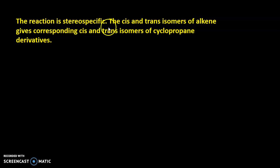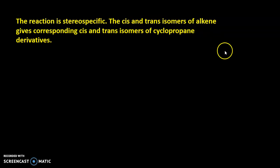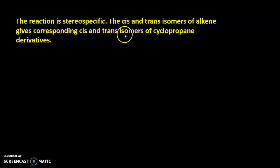One important thing to remember is that this reaction is stereospecific. The meaning of stereospecific is that whatever stereochemistry is present in the starting material, that stereochemistry is retained as-is in the product. We can say that cis and trans isomers of an alkene give the corresponding cis and trans isomers of cyclopropane derivatives.